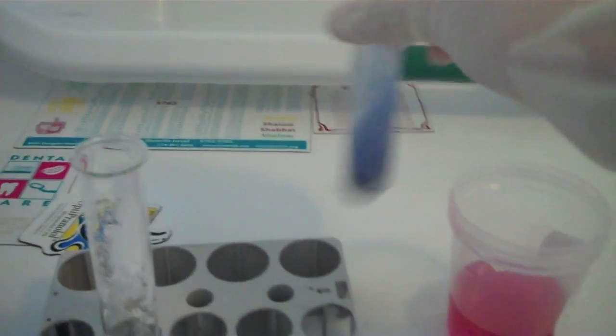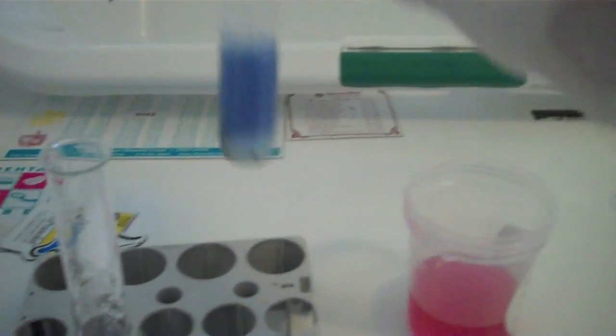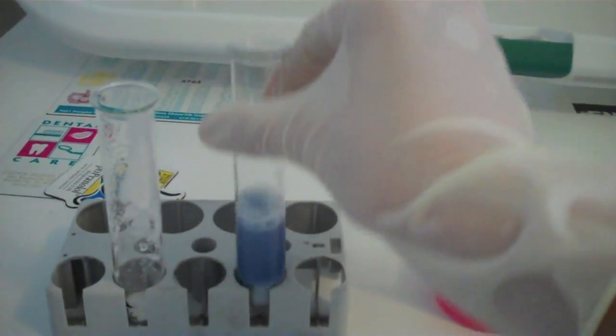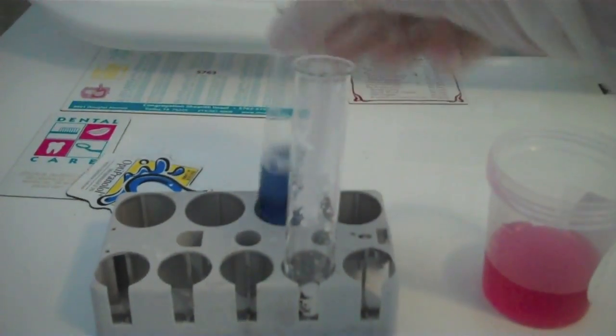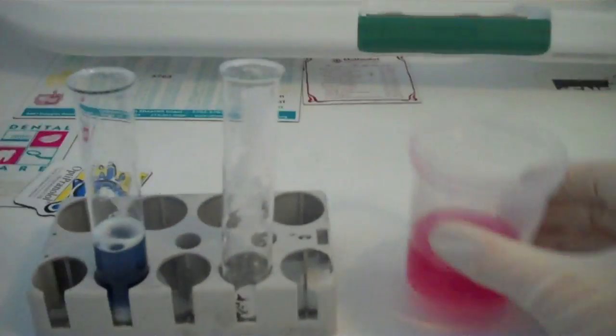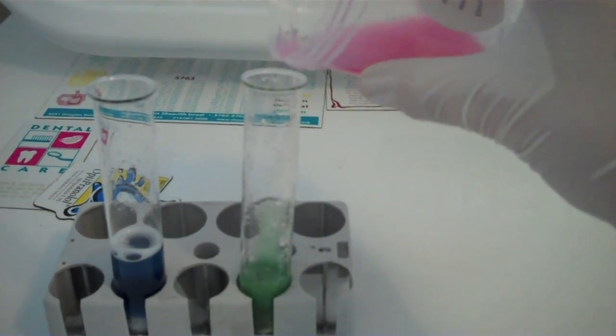When a red cabbage pH indicator is added to something with a pH of 8 to 9 it becomes blue. When a red cabbage pH indicator is added to something with a pH of 10 to 11 it becomes green, and when it's added to something with a pH of 11 to 13 it becomes yellow. These are all basic.